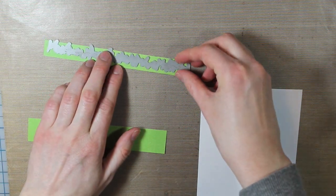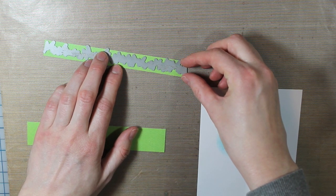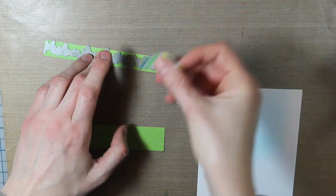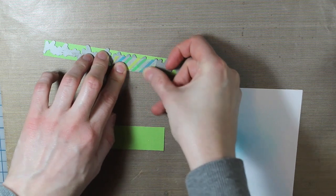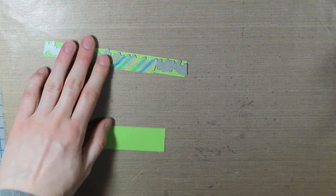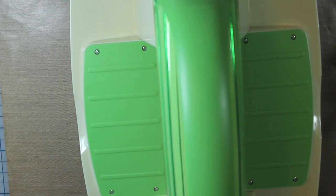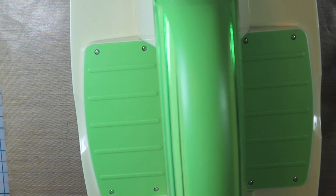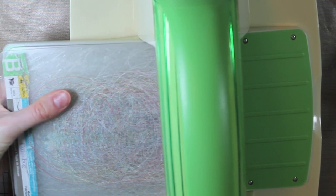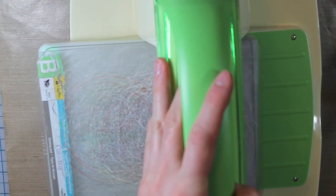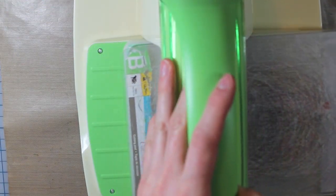I'll just go ahead and place that die on there and secure it into place with a little bit of washi tape, and then I can go ahead and run that through my Cuddle Bug. I'm going to do that with both of those strips of pattern paper. This is a little bit of a scene card, but not like a full blown scene. There's just going to be the grass and the sky and everything, and it's just going to be in a small area, which you will see later on.